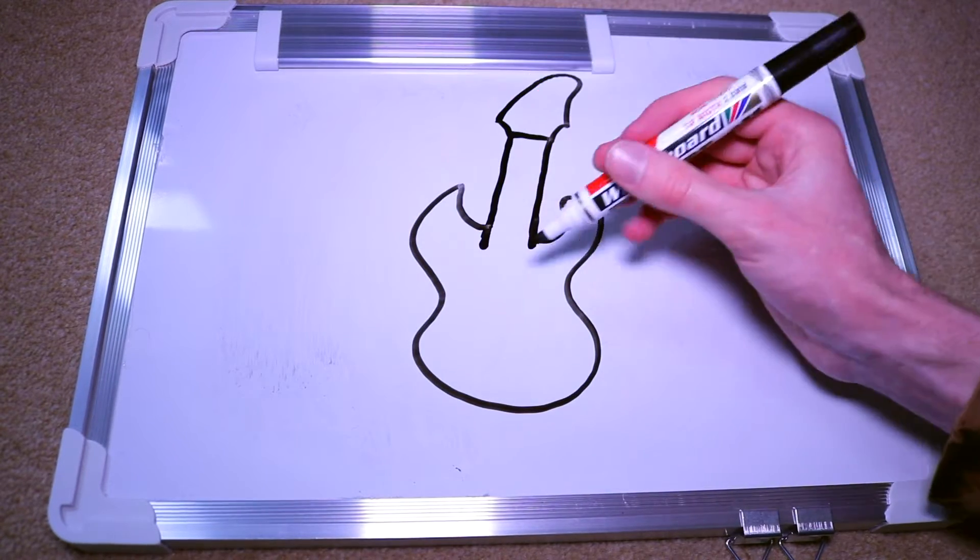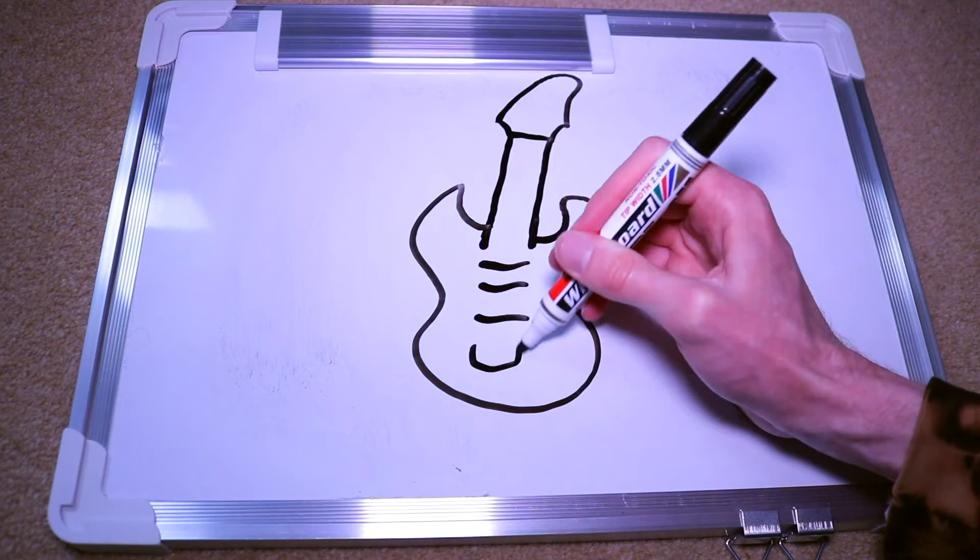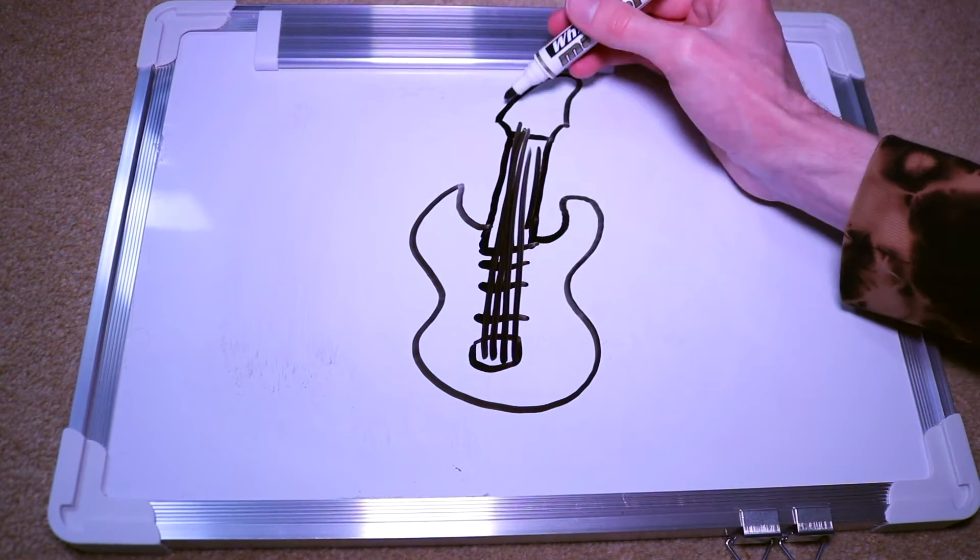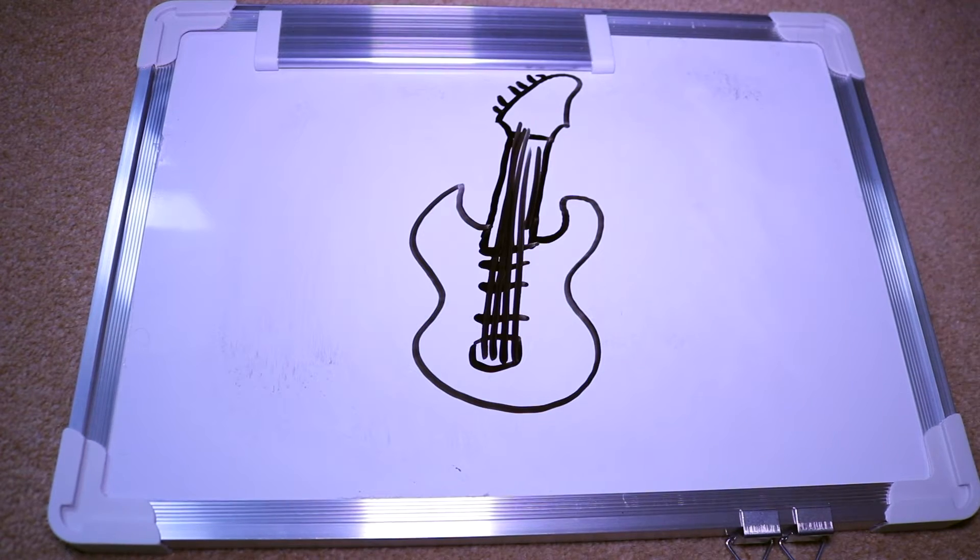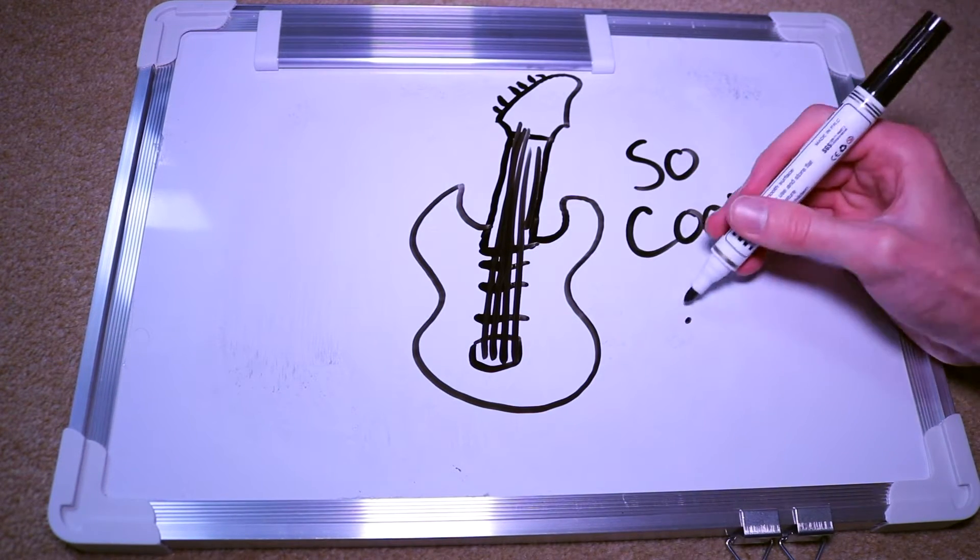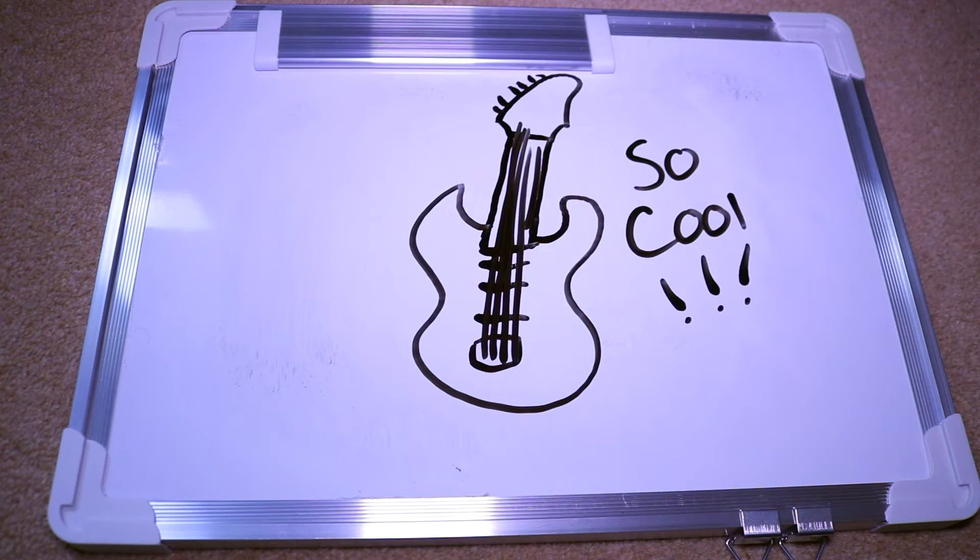A few months later, after pestering my dad enough times, he got me my first guitar. It was a knockoff Strat. It was black with what I think was a rosewood looking fretboard. That's the guitar I learned my first few riffs on. Mary Had a Little Lamb, Smoke on the Water. All I can actually remember me playing at that age, maybe Back in Black too by AC/DC.